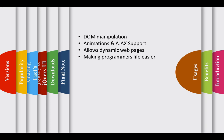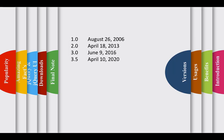Now let's talk about jQuery versions. Version 1.0 was released on August 26, 2006. Version 2.0 was released on April 18, 2013. Version 3.0 was released on June 9, 2016. The most recent version is 3.5, released on April 10, 2020.